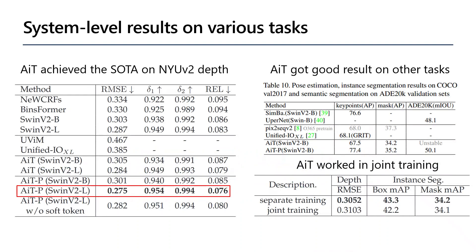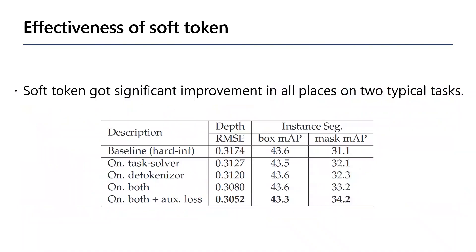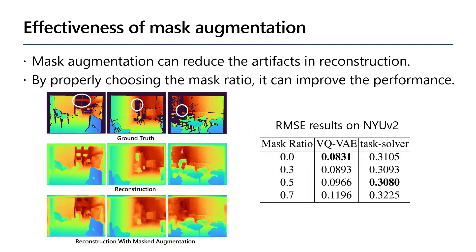We mainly study our method on tasks with diverse outputs. For depth estimation, we achieved state-of-the-art on the NYU V2 benchmark. For discrete output tasks such as keypoints and instance segmentation, AIT gets competitive results. When training two different tasks together, AIT can also achieve relatively good results. Ablation studies show that soft token gives significant improvement on depth estimation and instance segmentation. Mask augmentation visibly reduces artifacts in corrupted regions, and after properly choosing the mask ratio, it improves RMSE performance on depth estimation.